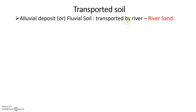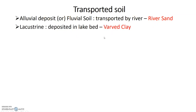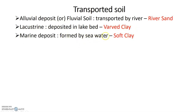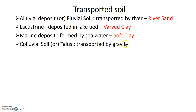Looking at transported soils: alluvial deposit or fluvial deposit is transported by river. Lacustrine deposit is a lake deposit. Marine deposit is formed by sea water and is typically soft clay.